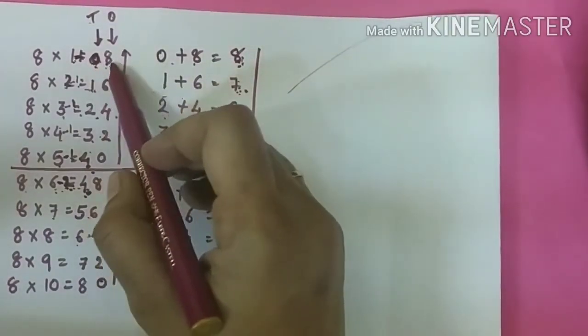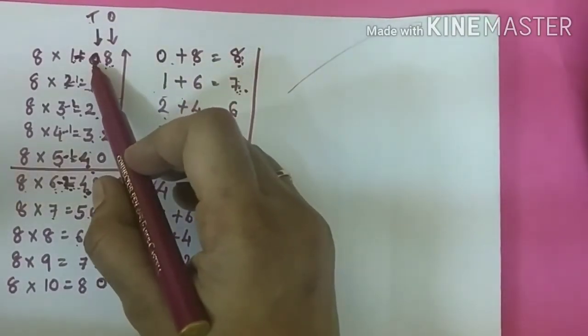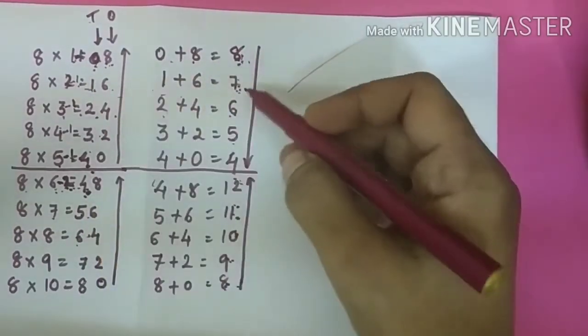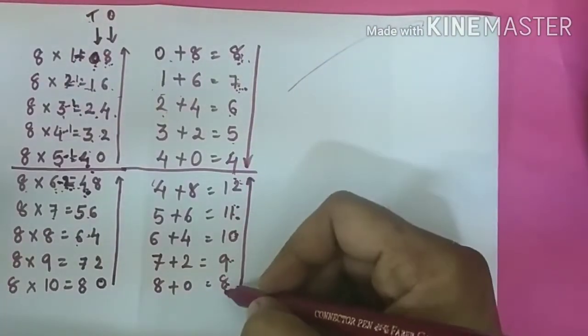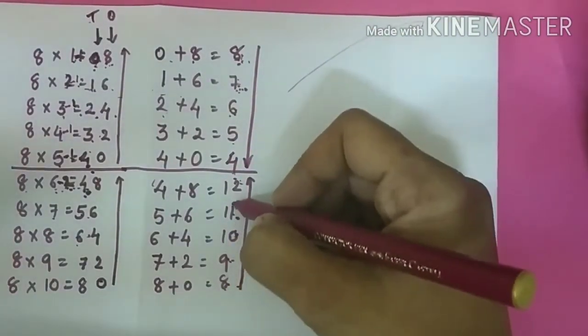And one more thing is that if you do addition of these 2 numbers, then total of these numbers, you will get 0 plus 8 is equal to 8. 1 plus 6 is equal to 7. So 8, 7, 6, 5, 4. And 8, 9, 10, 11 and 12.